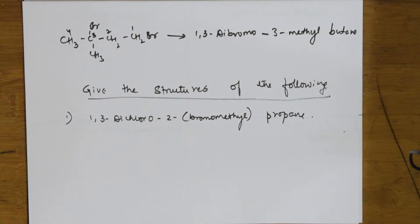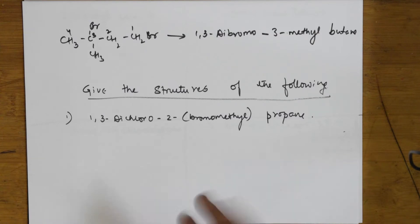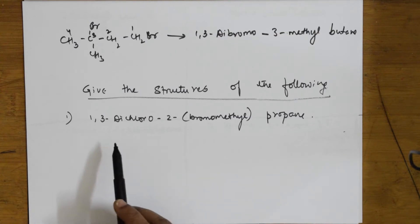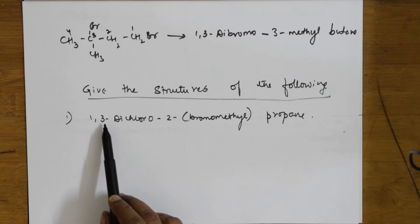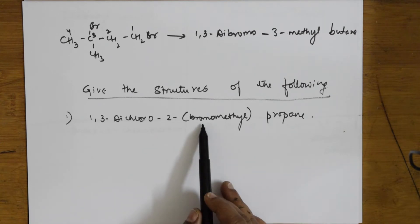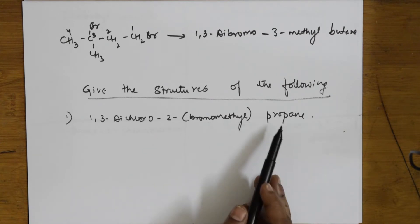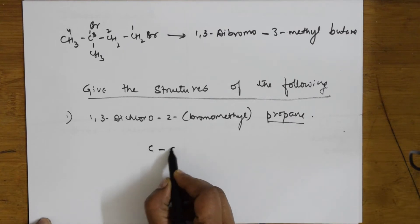Let us see the next set of IUPAC nomenclature names — how to write the structure when a name is given. Suppose they give me this compound: 1,3-dichloro-2-(bromomethyl)propane. The parent chain is propane, so let us write that parent chain first: one, two, three.